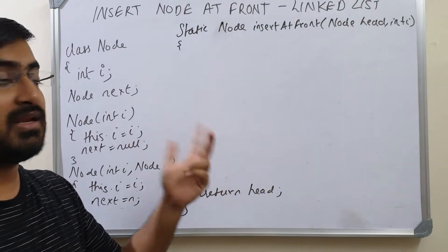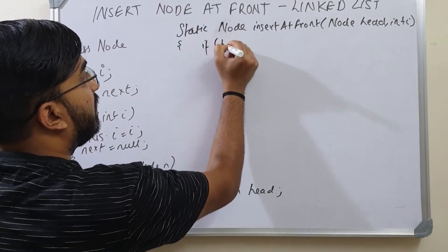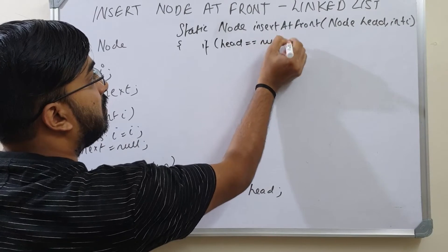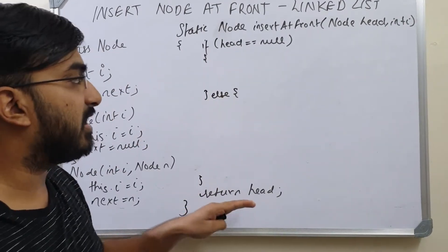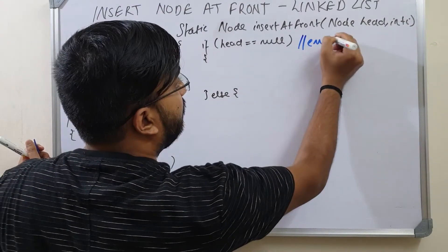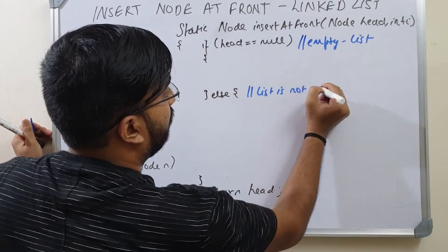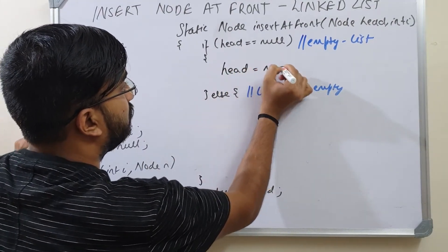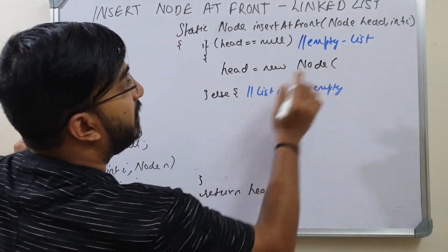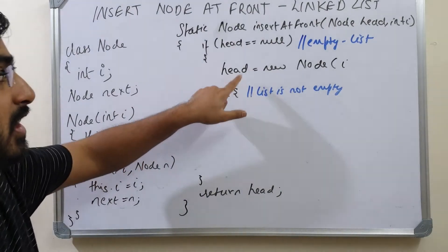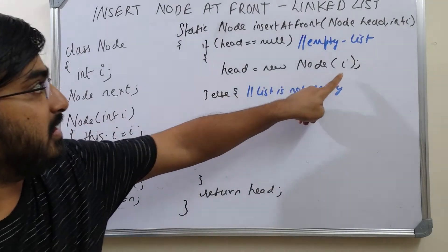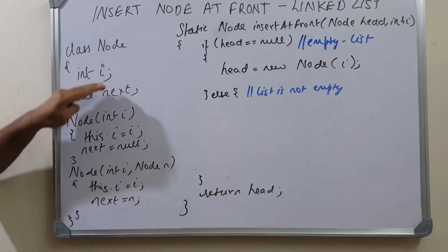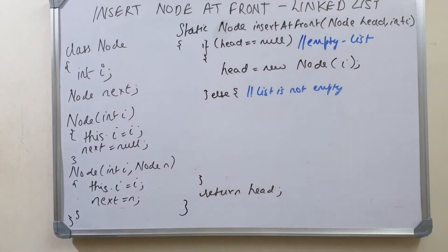In the main, the head is null indicating the list is empty. We have two cases: if head is null, and else if head is not null. In both cases we return the updated head. If head is null, indicating empty list, head equals new node — it takes the value i and next is null because this is the only node. We call the constructor that sets this.i to i and next to null, then return the head.